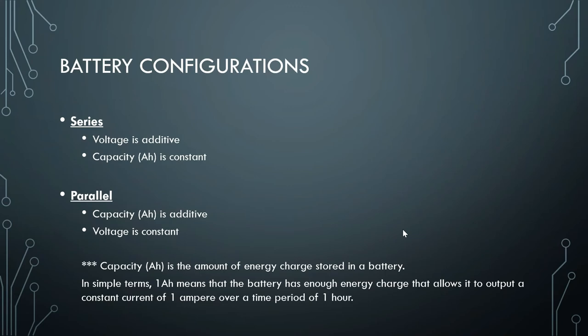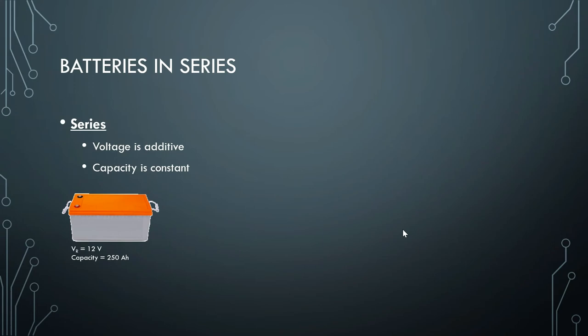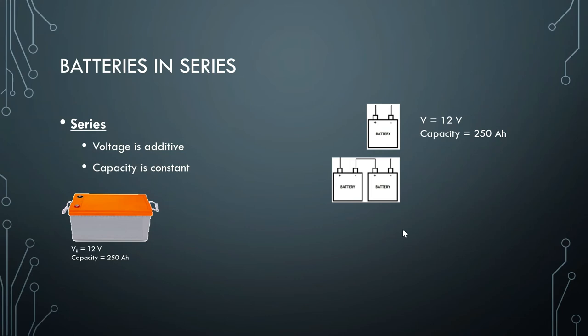Battery in series. As stated, voltage is additive and capacity is constant for batteries connected in series. For example, we have a battery with a voltage rating of 12 volts — measured across the positive and negative terminals — and a capacity of 250 ampere hours. If we connect two of these batteries in series, the voltage is additive: 12 volts plus 12 volts gives us 24 volts output, and the capacity remains constant at 250 ampere hours.